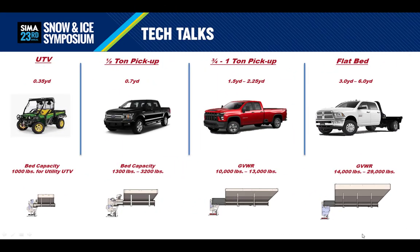Here's a quick guide on capacities. A true utility UTV typically has a capacity around 1,000 pounds, which a 0.35 cubic yard spreader works great. Today's half-ton trucks have a lot of capability but vary greatly, which makes a 0.5 to 0.7 cubic yard spreader a good fit. Three-quarter ton and 1-ton trucks are a very common choice in our industry and are work horses, but the bed will limit spreader capacities to the 1.5 to 2.25 cubic yard range. Flatbed trucks are increasing in popularity because of their weight carrying capacity — these are great for 3 cubic yard spreaders and bigger. Just be mindful of the weight restrictions in your area or needing a CDL license.